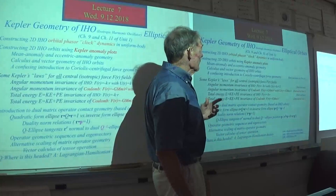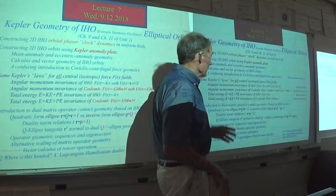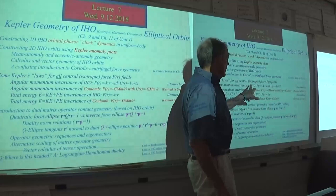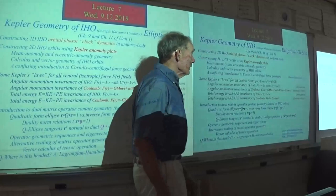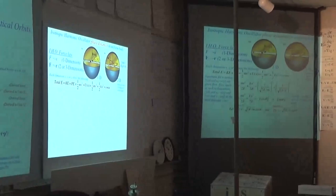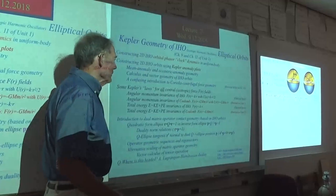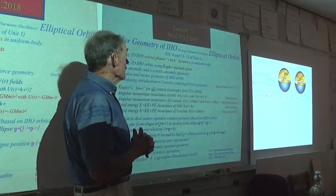The two fields that are the most famous for physics, and also the ones we can do analytically, are the harmonic oscillator — particularly the isotropic harmonic oscillator, IHO — which is the highest symmetry. It has a symmetry of unitary three, which doesn't mean much if you haven't studied group theory, but we'll be coming to that later in the course.